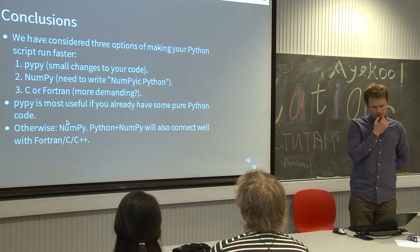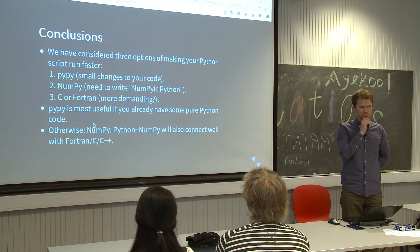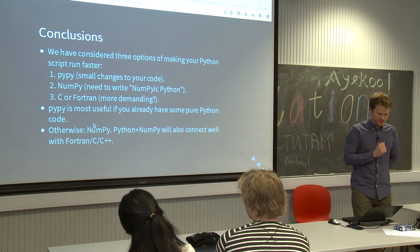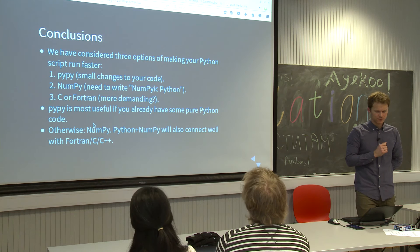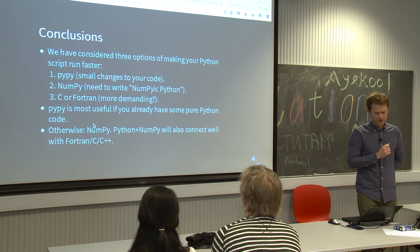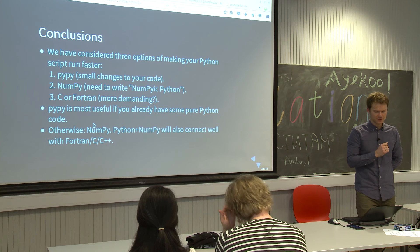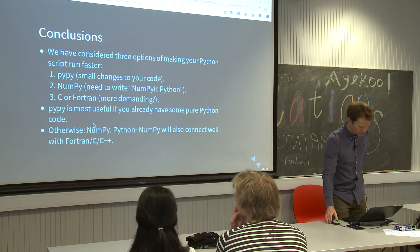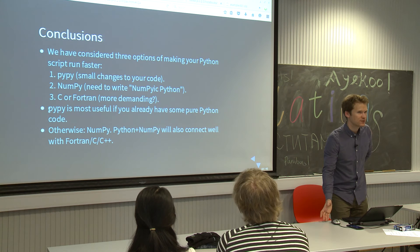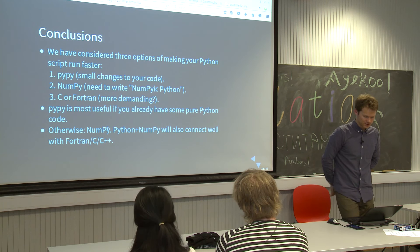To sum things up, we have looked at three ways to improve the performance of Python scripts. First is PyPy: it requires almost no change to the Python code but does not give you as much speedup. Then there is NumPy: you would have to actually make more changes to write things in a NumPy style. Then you can do stuff with C or Fortran, which may take more time unless you have some Fortran code already in place, which would then be very simple to call from Python. If you have pure Python code and want to try executing it faster, just try PyPy. Otherwise, I would say go with NumPy, because you will also get a big library to use and it also interacts well with Fortran, C, and C++.